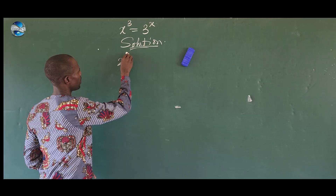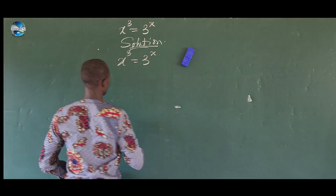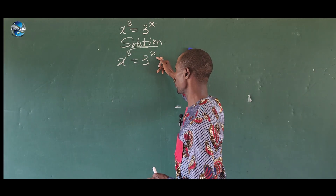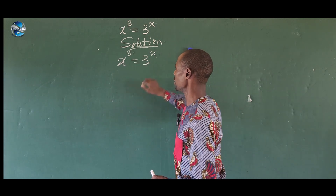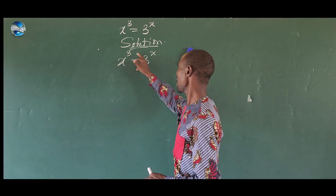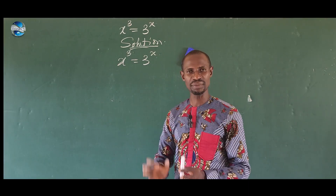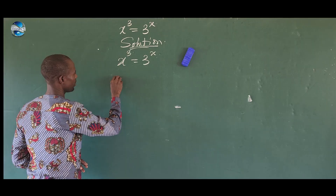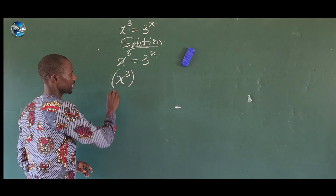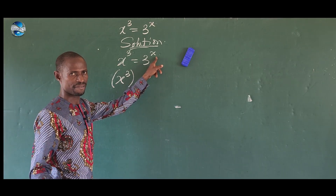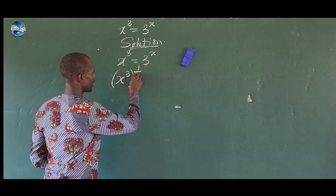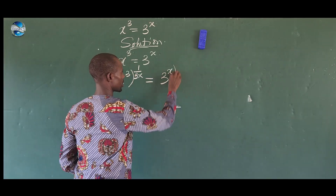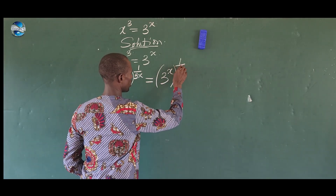The question is x³ = 3^x. The power on the left is 3 and the power on the right is x. To eliminate both, I'll multiply these two powers together and find the reciprocal, which gives 1 over 3x. I'll raise both sides to the power of 1 over 3x, giving x³ all raised to 1/(3x) equals 3^x all raised to 1/(3x).